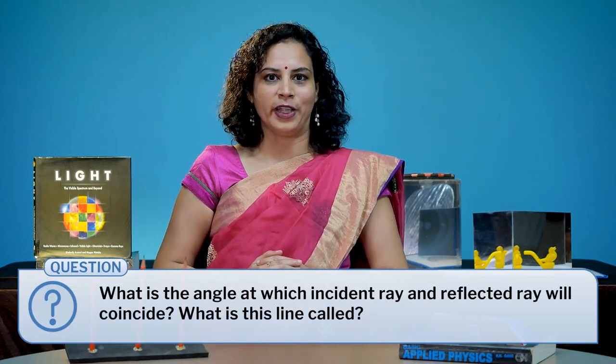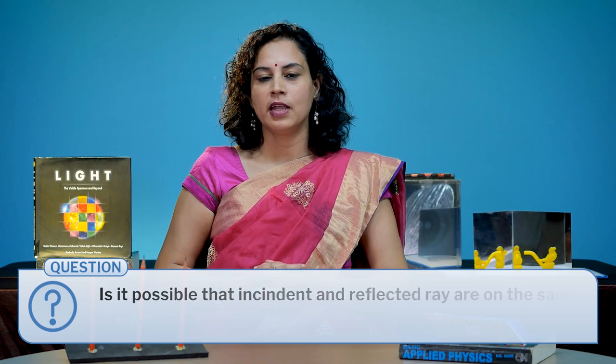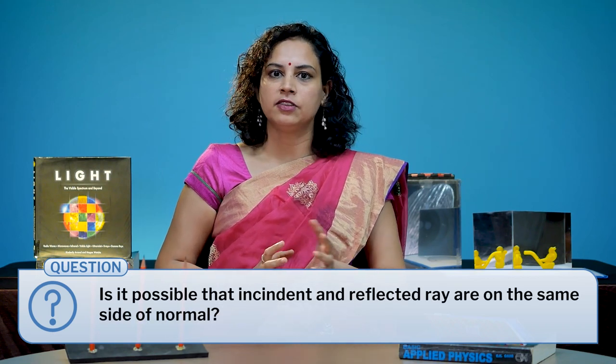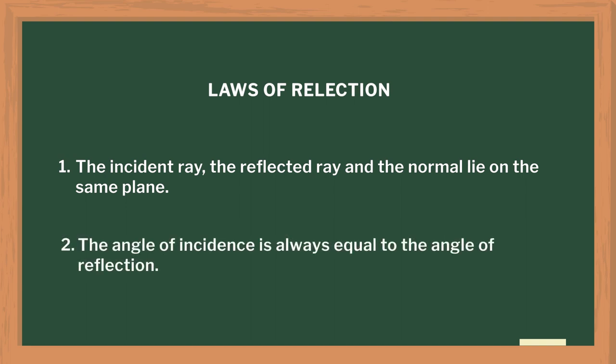I noticed that students often confuse these terms with the ray of incidence and ray of reflection. After this activity, we discussed questions such as: at what angle will the incident ray and reflected ray coincide, and what is this line called? Is it possible that the incident ray and reflected ray are on the same side of the normal? What if the laser beam falls on the board at an angle instead of perpendicular? Then I introduced the laws of reflection: the incident ray, reflected ray, and the normal all lie on the same plane, and the angle of incidence is always equal to the angle of reflection.